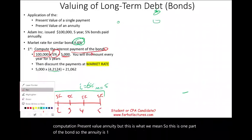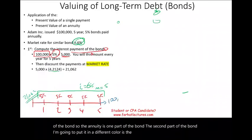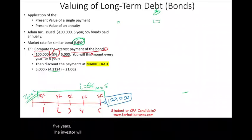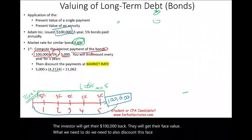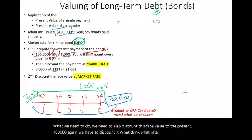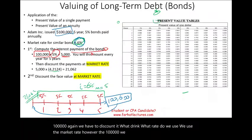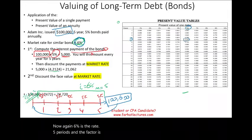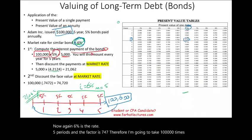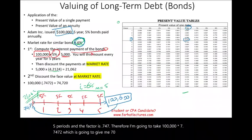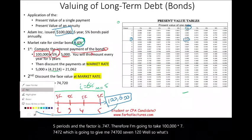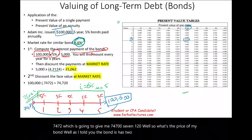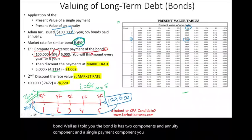The second part of the bond is the face value. At the end of five years, the investor receives their $100,000 back. We need to discount this face value to the present as well. Again, we use the market rate of 6%. Since the $100,000 is received only once, we use the single payment table. With 6% and five periods, the factor is 0.7472, giving us $100,000 times 0.7472 equals $74,720. The bond price is the sum of both components: the annuity value plus the face value present value.